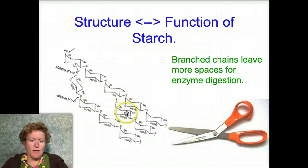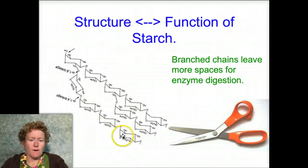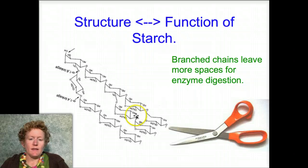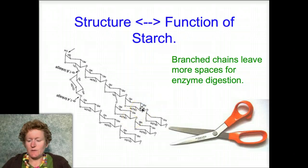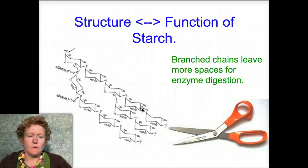Those branching chains make lots of room for enzymes to break down starches by cutting bonds. The more chains you have, the more places enzymes can get in and cleave the glucose-to-glucose bond, converting starch back into glucose.